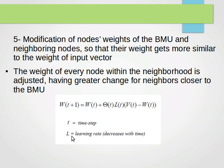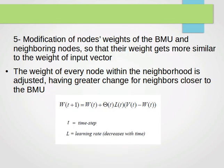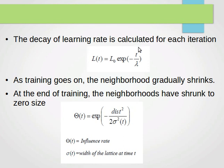t is the time step and L is a learning rate which keeps changing and decreasing as time progresses. The decay of the learning rate is calculated for each iteration: Lt equals L0 e to power minus t over lambda. L0 is the learning rate at the beginning. As training goes on, the neighborhood gradually shrinks. At the end of training, the neighborhoods will have shrunk to zero size, according to that equation as you can see in front of you. If you understand just the intuition behind it, these things will be easy to compute.